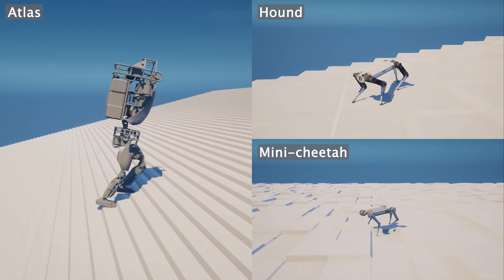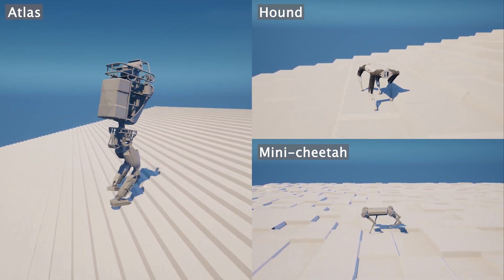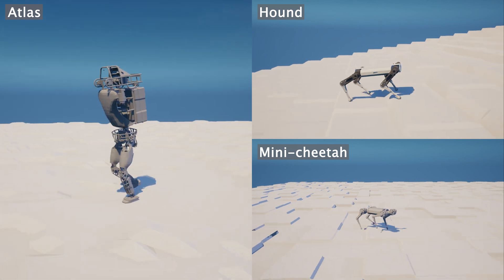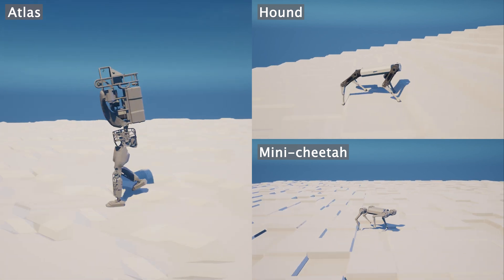By leveraging generalizable constraints, high-performant locomotion controllers can be trained with only three reward terms and a single reward coefficient modification.